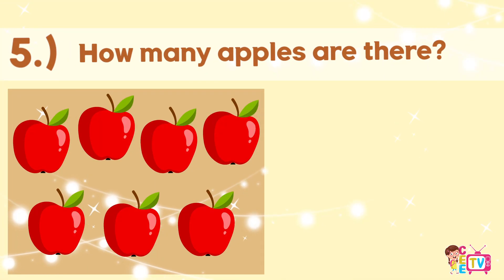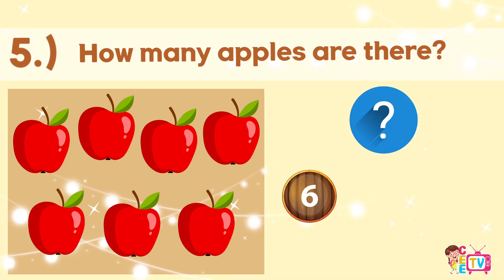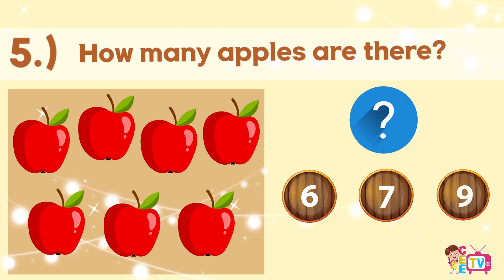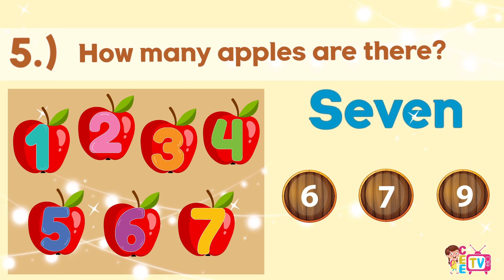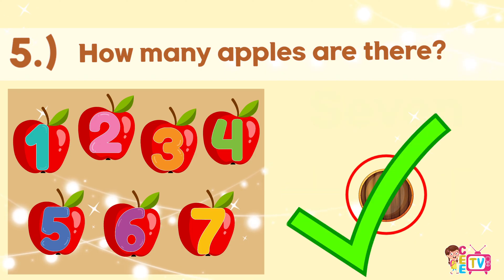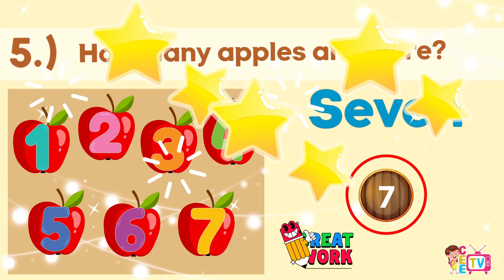Number five. How many apples are there? One, two, three, four, five, six, seven. There are seven apples. I will circle number seven. Fantastic! You are right. There are seven apples.